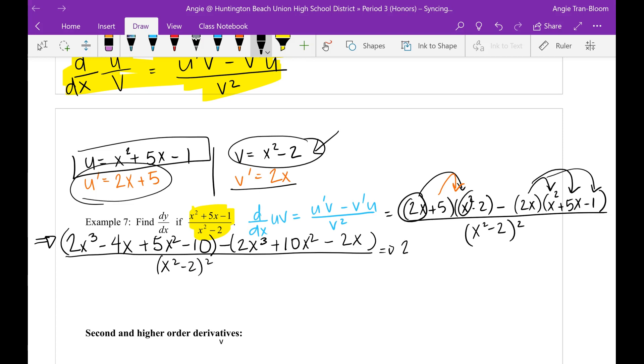Now I will distribute the negative. So 2x to the third—I'm writing smaller because it looks like I need a lot of space—minus 4x plus 5x squared minus 10. Now minus 2x to the third minus 10x squared plus 2x all over x squared minus 2 to the power 2. So let's see what things are canceling. Those are canceling. Those are canceling. Let's combine like terms.